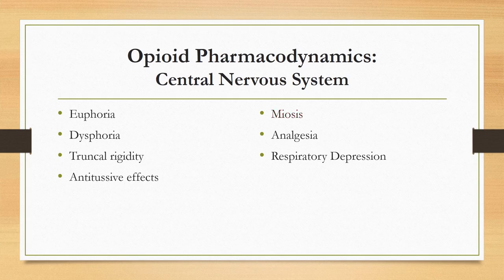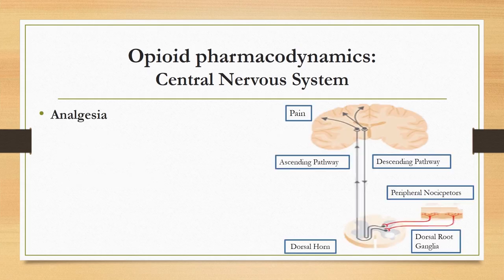Miosis, also known as pinpoint pupils, is caused when opioids depress GABA, causing the oculomotor nerve to constrict the pupil. Notably, tolerance to this side effect does not develop. Miosis can be reversed by naloxone, atropine, or glycopyrrolate.